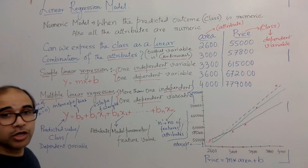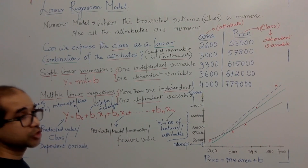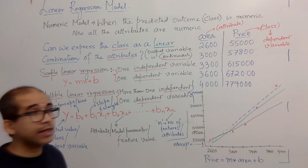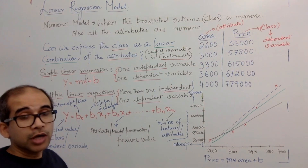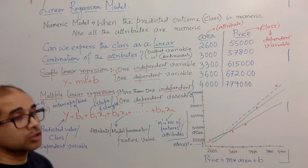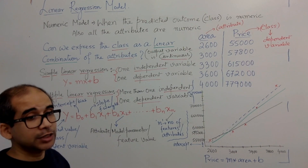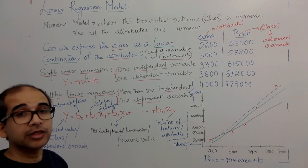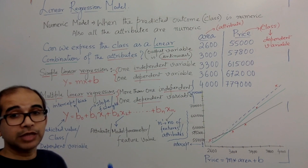Today we discuss linear regression. Linear regression model is a very important algorithm in machine learning. It's a numeric model — that means when we are dealing with numbers, the outcome or the predicted value is a number. For example, we are trying to forecast stock prices based on certain numeric parameters, or forecast house prices based on the area of the house, the year built, or a combination of multiple numeric variables.